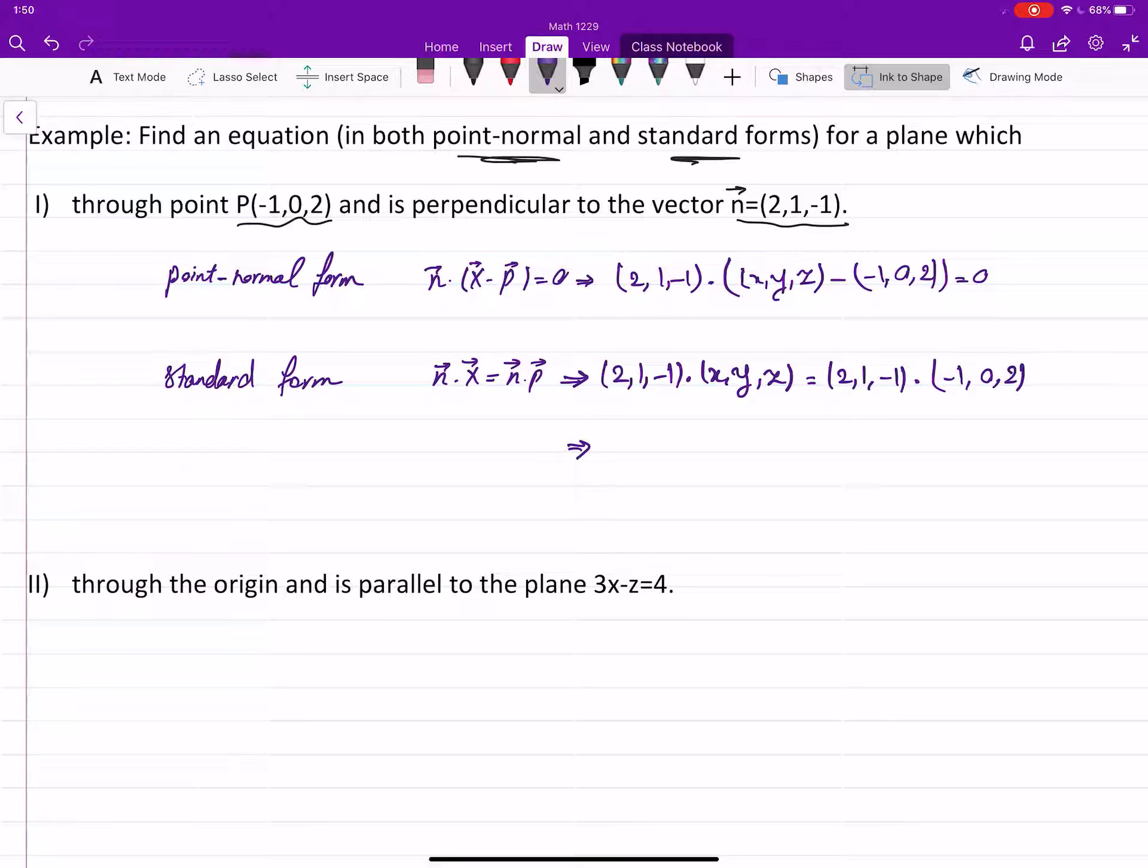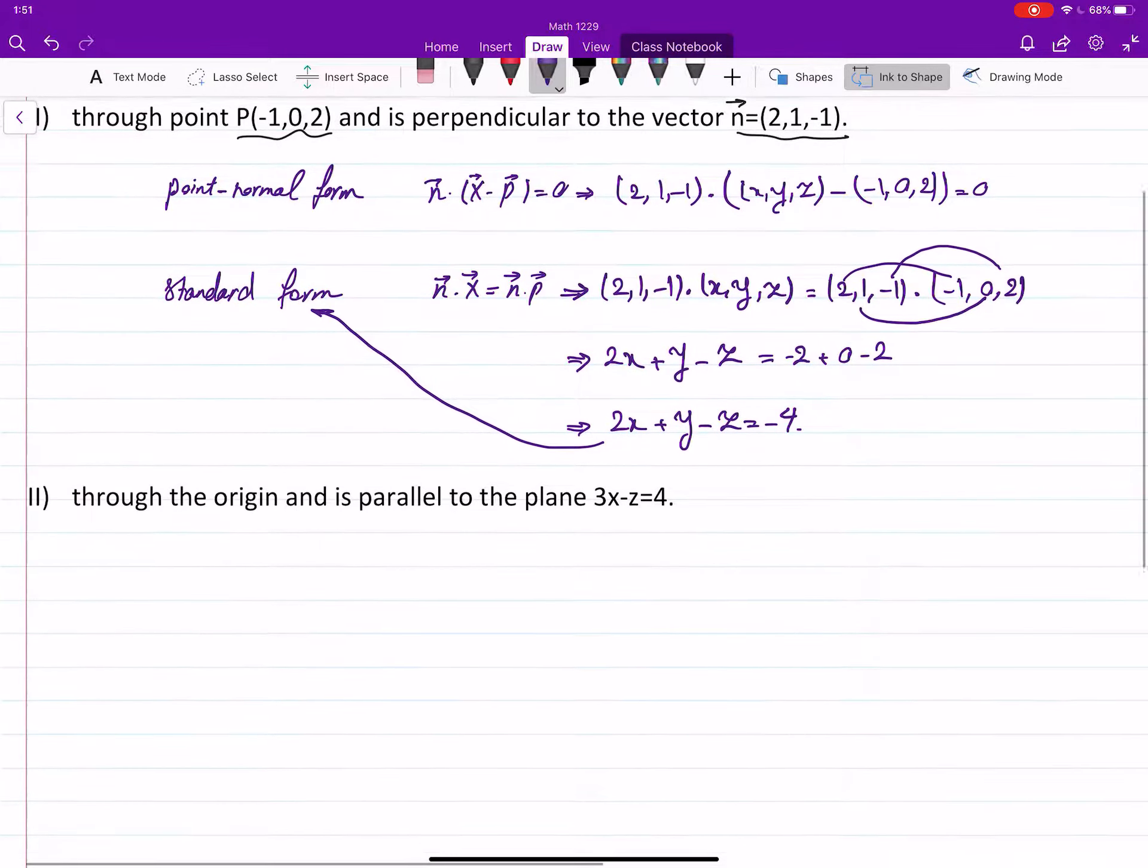While expanding the dot product, you get 2x + y - z equals 2 times -1 is -2, plus 0, and -1 times 2 is -2. So the standard form for the plane is 2x + y - z = -4. This is, to be precise, the standard form.